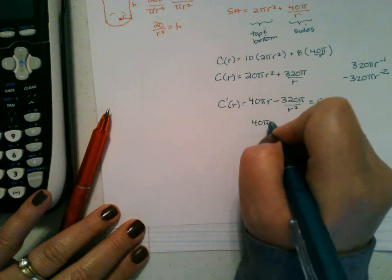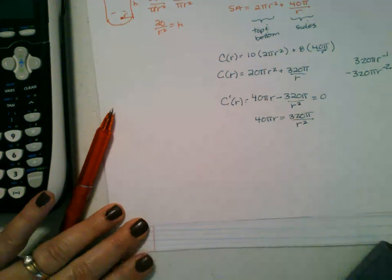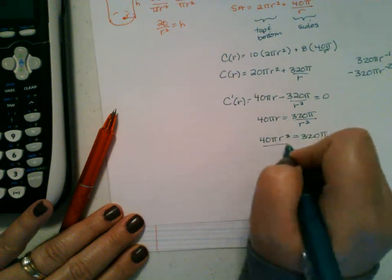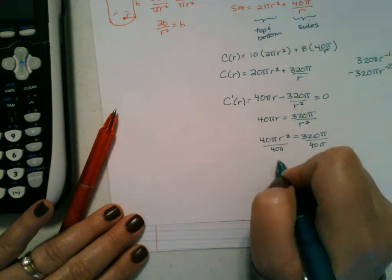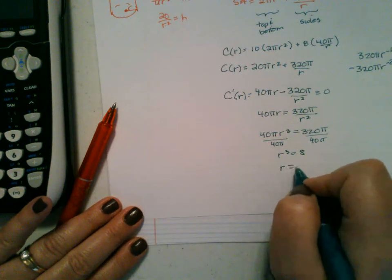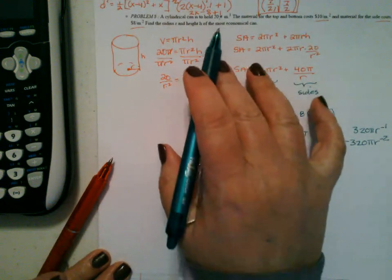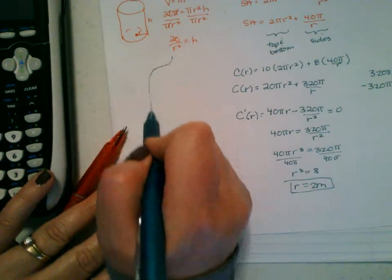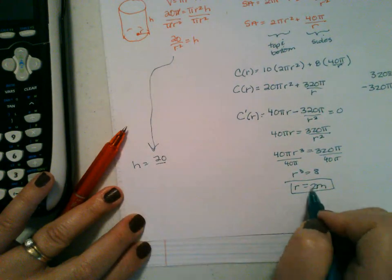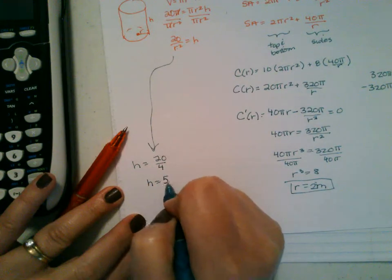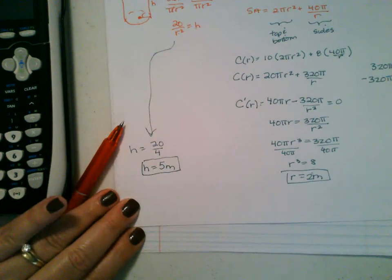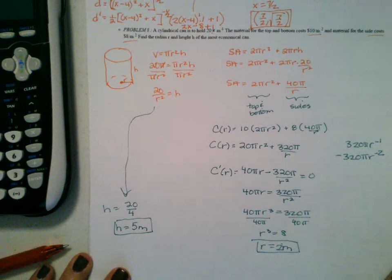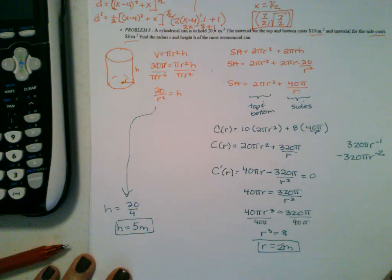Divide by 40π: R³ = 8. Take the cube root: R = 2 meters. The radius is 2 meters. For the height: H = 20/2² = 20/4 = 5 meters. So the height is 5 meters. There you have it — I hope that helps. I will see you tomorrow in class and we will go over day two of your test review. Have a great day, everybody.